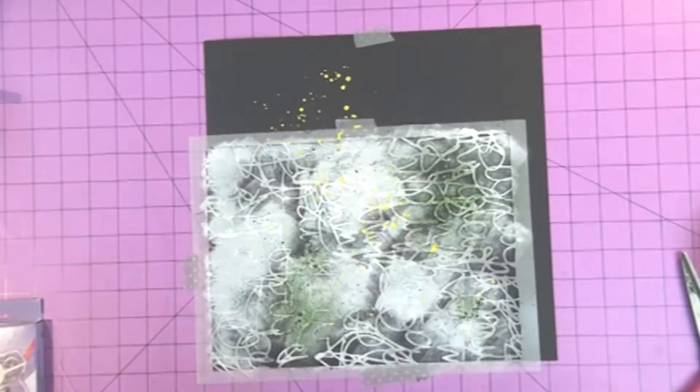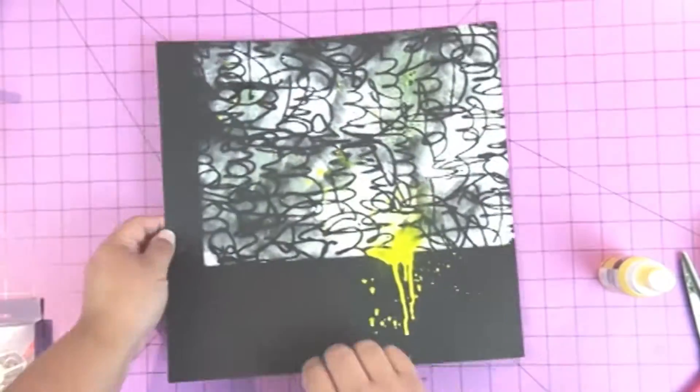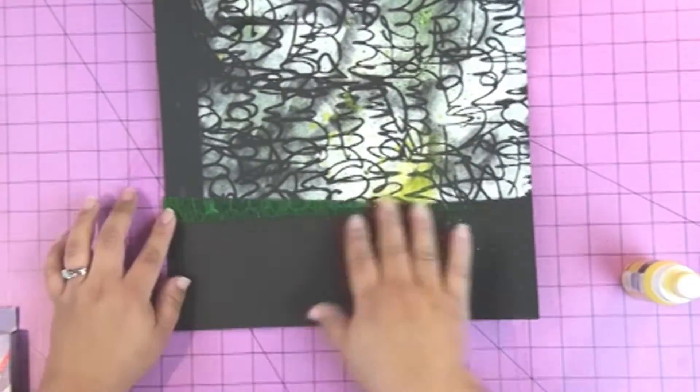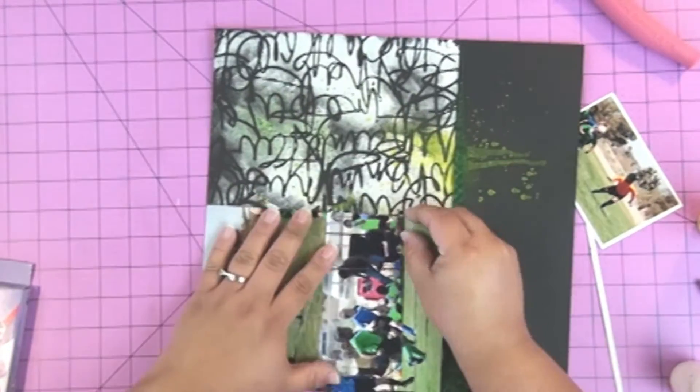Next I'm using some spray ink and spraying that as well as using the straw and then kind of flicking that to make it drip. And then also I sprayed some ink and then tapped the page onto the table to make it drip.